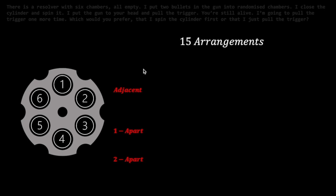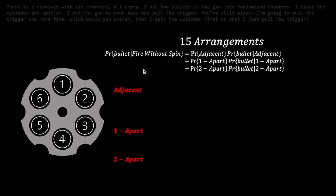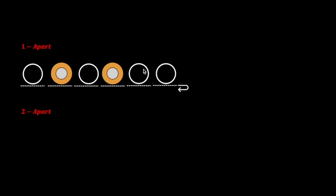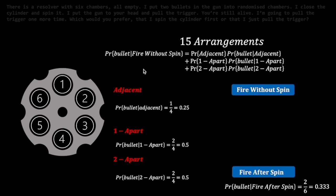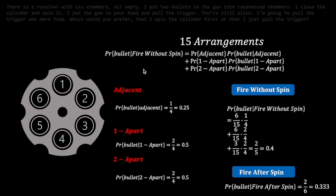Since each arrangement may have different possibilities of encountering a bullet, the probability of encountering a bullet placed in two randomized chambers without a re-spin is the sum product of each arrangement and its associated conditional probability. These three situations are mutually exclusive, so we can sum the terms. For adjacent bullets, the conditional probability is 1 over 4, as calculated previously. For two bullets spaced one chamber apart, two of the four empty chambers will have a bullet coming up next, giving a conditional probability of 2 over 4. This works out to 2 over 5, or 0.4.